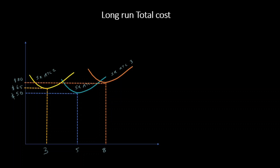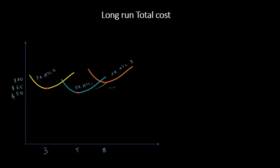In the long run, we can always change our fixed capacity based on the optimal points of production. For three customers we pick a smaller room, for five customers a medium space, and for eight customers a larger space. In the short run, we cannot customize our fixed capacity to match demand, but in the long run we can — meaning we can always choose to operate at minimum average total cost. Joining all the minimal points on the short-run average total cost curves gives us the long-run average total cost curve, shown here as the green curve.